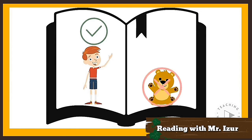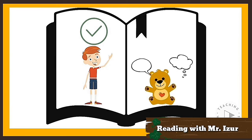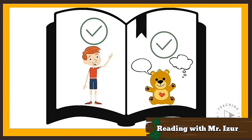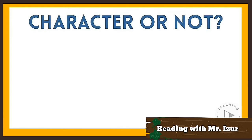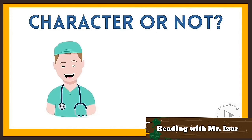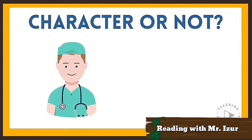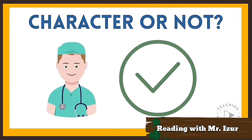For example, a story might be about a boy and his teddy bear. Of course the boy is a character because he's a person. If the teddy bear is just a regular toy, then it wouldn't be a character. But if the teddy bear can think, feel, move, or maybe even talk, then it would be a character in the story.